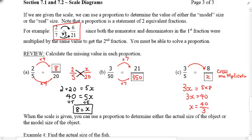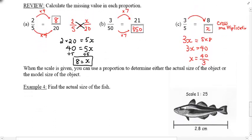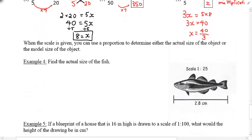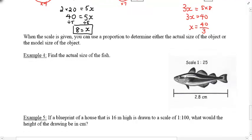So why is this important to us? Because when the scale is given, you can use a proportion to determine either the actual size of the object or the model size of the object. So let's look at this. Example number 4. Find the actual size of the fish.